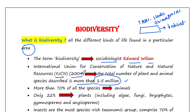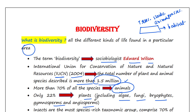More than 70 percent of all the species recorded are animals, while plants — which include algae, fungi, bryophytes, gymnosperms, and angiosperms — comprise only 22 percent of the total.